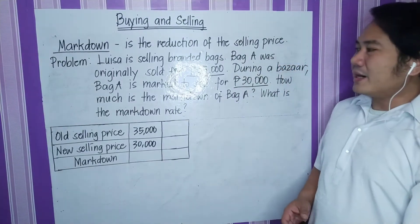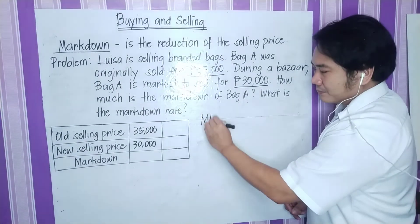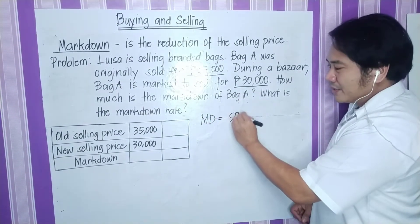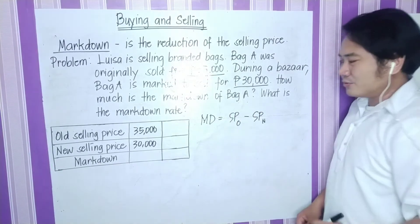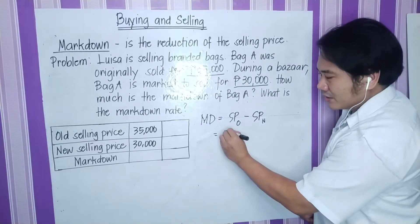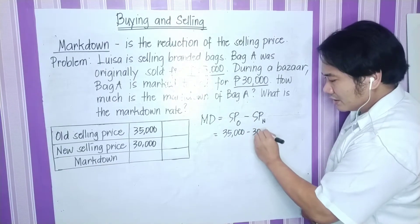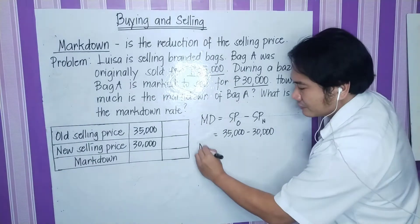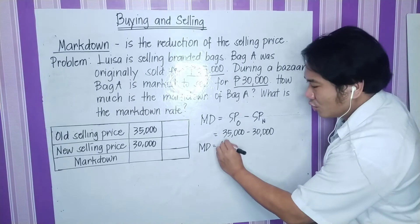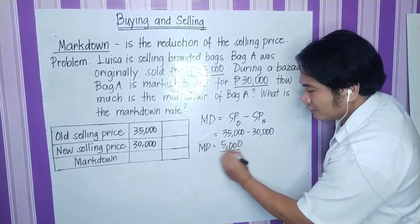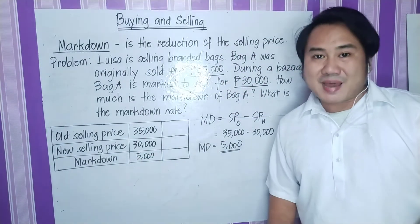Next, we are asked: how much is the markdown of bag A? Markdown is equal to the old selling price minus the new selling price. The old selling price is P35,000 and the new selling price is P30,000. Subtracting P35,000 and P30,000 will give us a markdown of P5,000 pesos. That is the markdown of bag A.